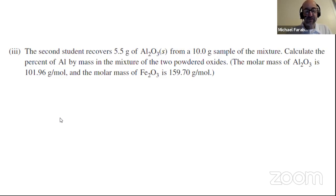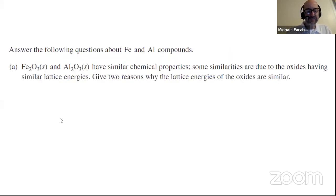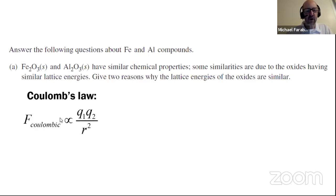I'm going to assume you have done that, and now I'll go over part A. Fe2O3 solid and Al2O3 solid have similar chemical properties. Some similarities are due to the oxides having similar lattice energies — give two reasons why. These two reasons relate to Coulomb's law, which applies to the attraction between charged particles, between polar molecules, or between the nucleus and electrons.